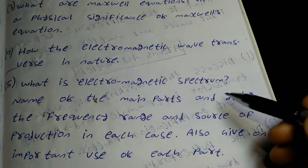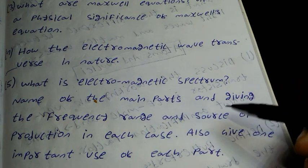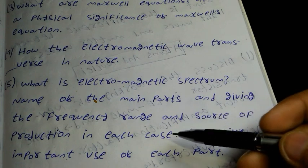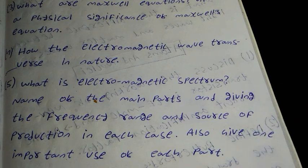Number 5: What is electromagnetic spectrum? Name of the main parts and give the frequency range, source of production in each case. This also gives important use of each part. The frequency range we have the table.